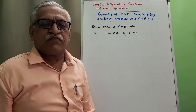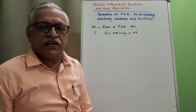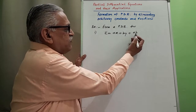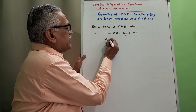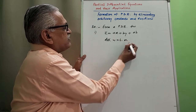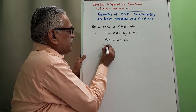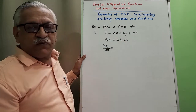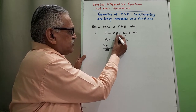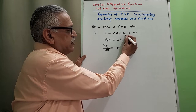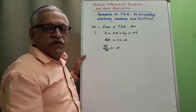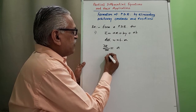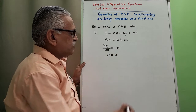Here z becomes a function of two independent variables, so whatever derivatives we obtain are partial derivatives. As it is a function of x and y, first we differentiate with respect to x, keeping y constant. The derivative of z with respect to x is dou z by dou x, which equals a; the derivative of by and ab are both zero since they are constant. Since dou z by dou x is p, we get p equals a, or a equals p.